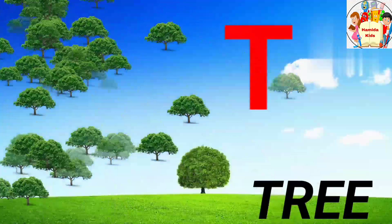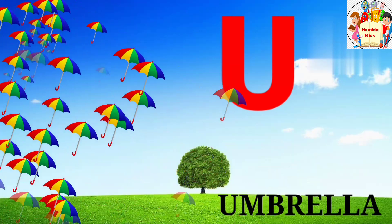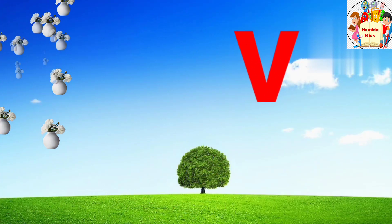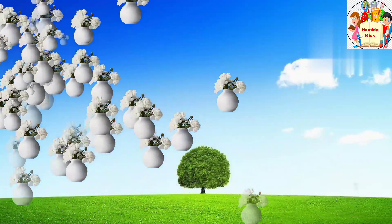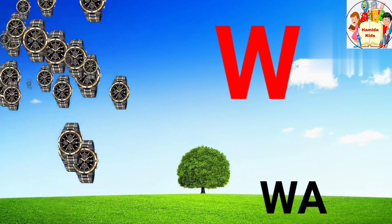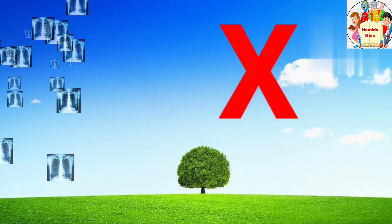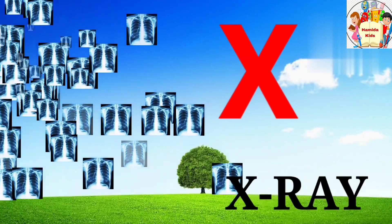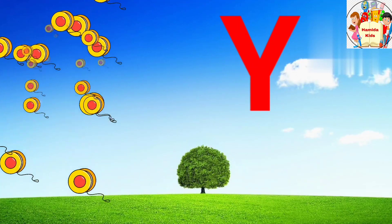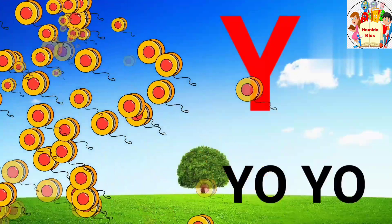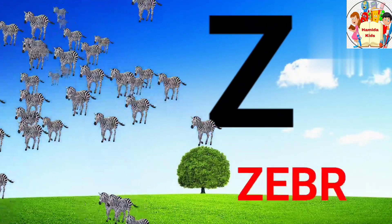U for umbrella, V for vase, W for watch, X for x-ray, Y for yo-yo, Z for zebra.